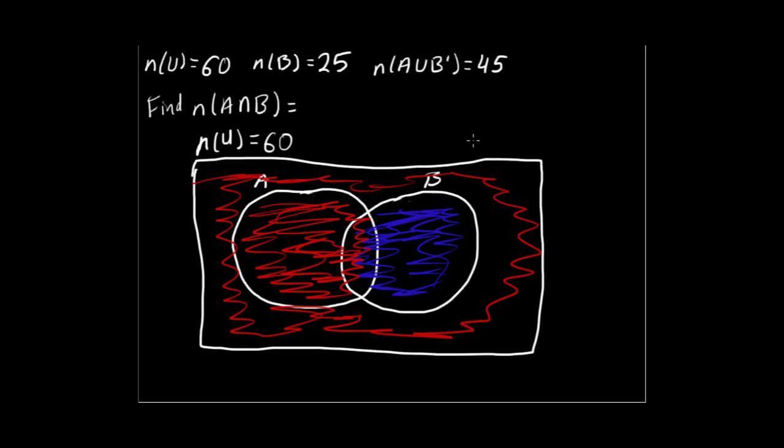Obviously you can see that there's an overlap of colors here. That's the intersection of A and B. We know there are 45 elements represented by the red shading, and there are 25 represented in blue.